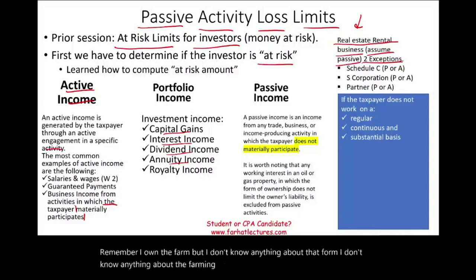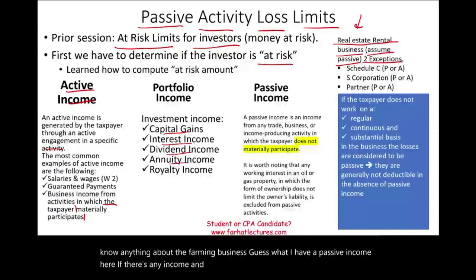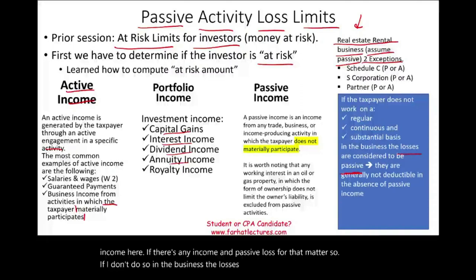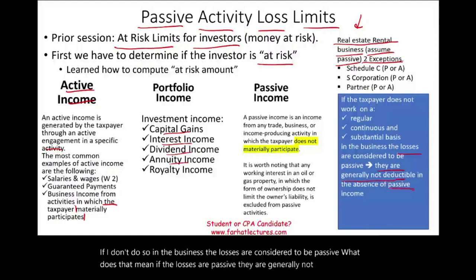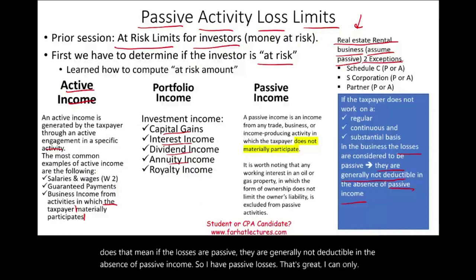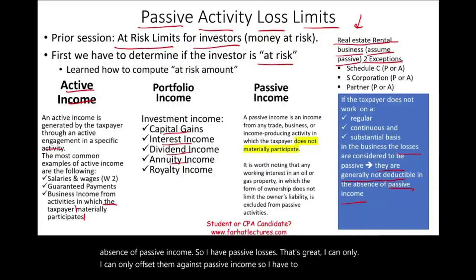If there's any income from a business I don't participate in, I have passive income — and passive loss for that matter. If the losses are passive, they are generally not deductible in the absence of passive income. I can only offset passive losses against passive income. So I have to have passive income in order to use my passive losses.